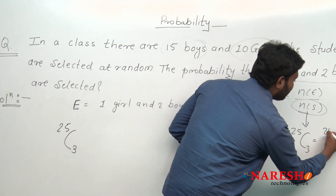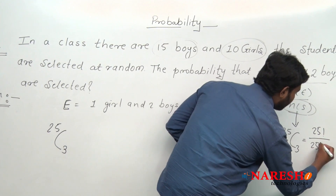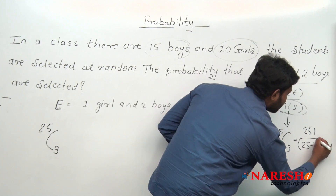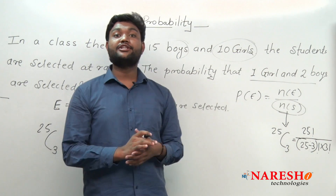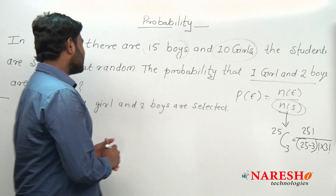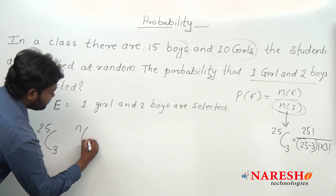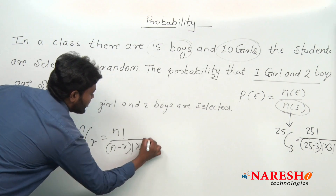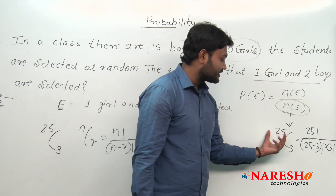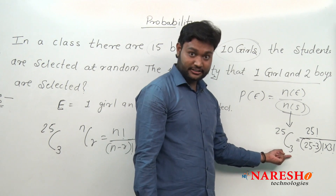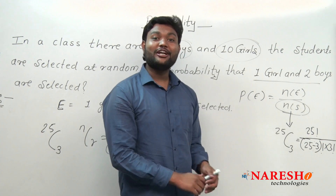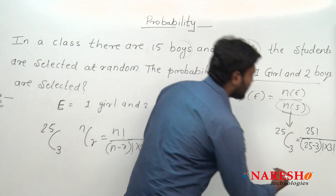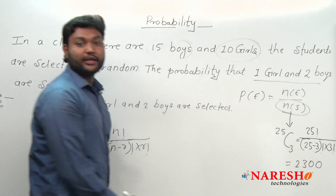If you calculate 25C3, using the formula NCR equals N factorial upon N minus R factorial into R factorial, with N equal to 25 and R equal to 3, we get 25 factorial upon 25 minus 3 factorial into 3 factorial. Solving this gives the answer 2300.